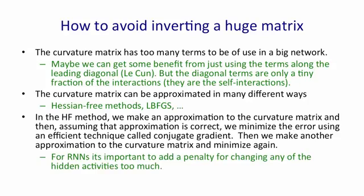It's also important in recurrent neural networks to add a penalty for changing any of the hidden activities too much. That will prevent us, for example, from changing a weight early on that causes huge effects later on in a sequence. We don't want to get effects that are too big, and if we look at the changes in the hidden activities, we can prevent that by penalizing those changes. If we put a quadratic penalty on those changes, we can combine that with the rest of the Hessian-free method.